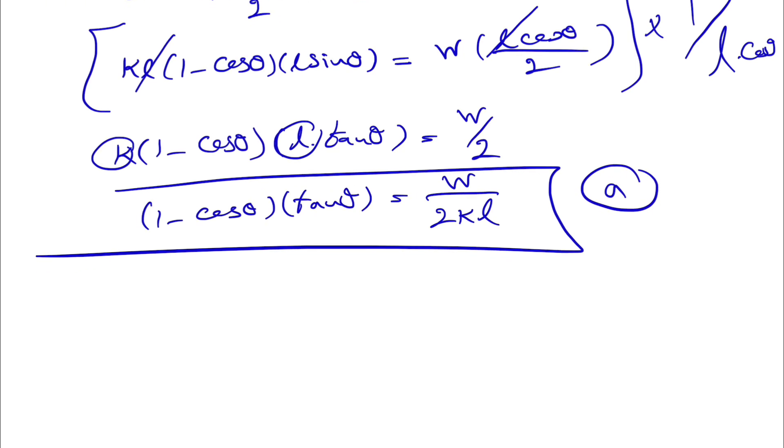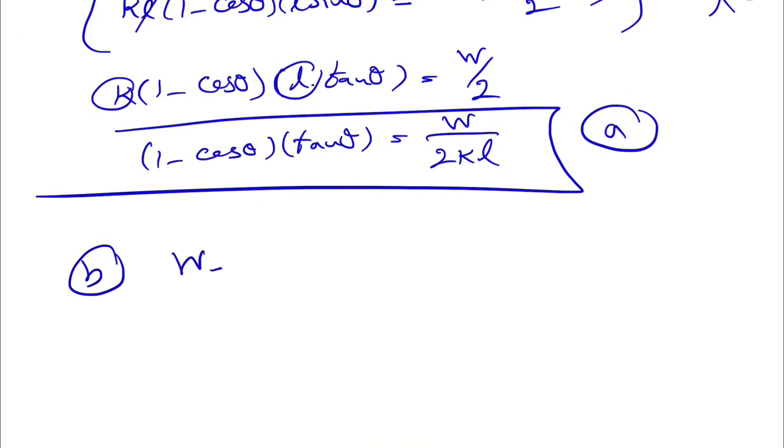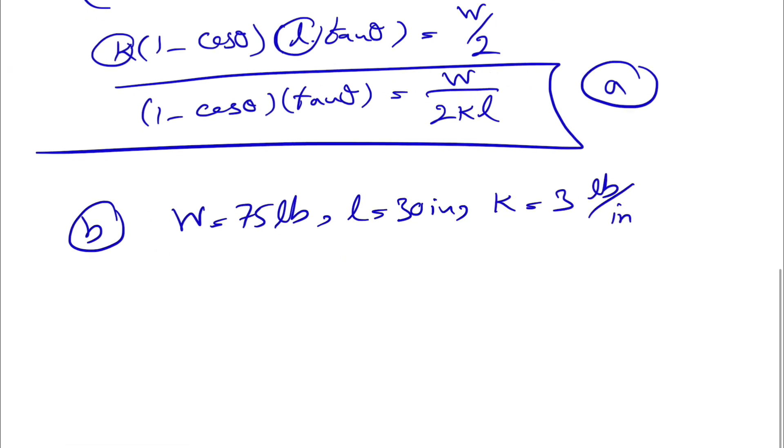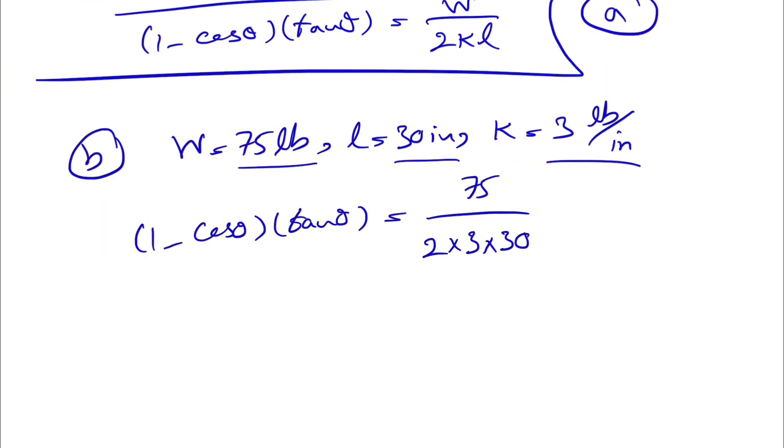Part B is pretty straightforward. We just need to have our W 75 pounds, our L 30 inches, and our K 3 pounds per inch. Let's just plug these numbers into our equation. We have 1 minus cosine of theta times tangent of theta equal to W, which is 75, divided by 2 times 3 times 30. We don't need to worry about the units because they're all homogeneous based on pounds and inches.